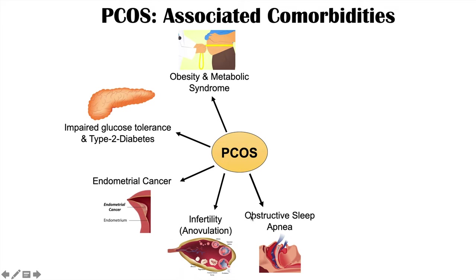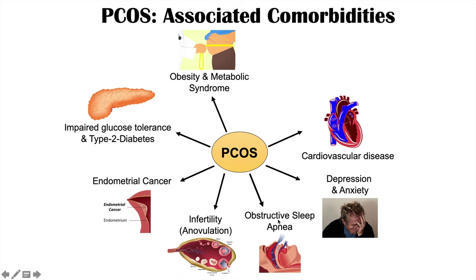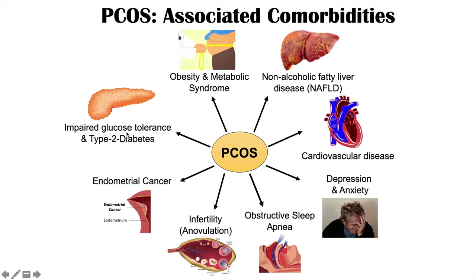Another associated comorbidity is obstructive sleep apnea, often related to the obesity component — excess weight around the neck can obstruct the airway. These patients can also have issues with depression and anxiety. Cardiovascular disease is associated through obesity, metabolic syndrome, impaired glucose tolerance, type 2 diabetes, and obstructive sleep apnea all increasing cardiovascular risk. They can also have non-alcoholic fatty liver disease, related to insulin resistance, leading to fat accumulation around the liver, liver inflammation, and ultimately liver disease.